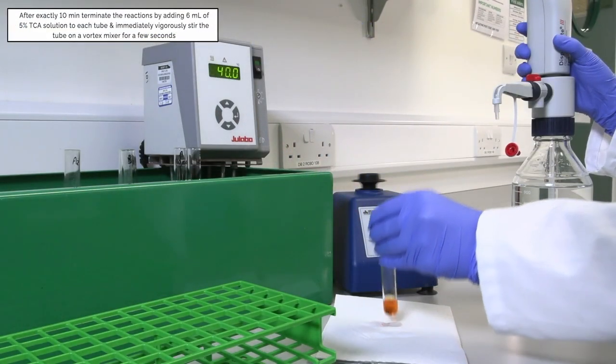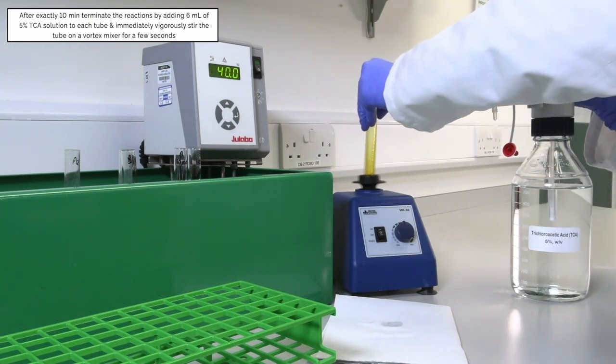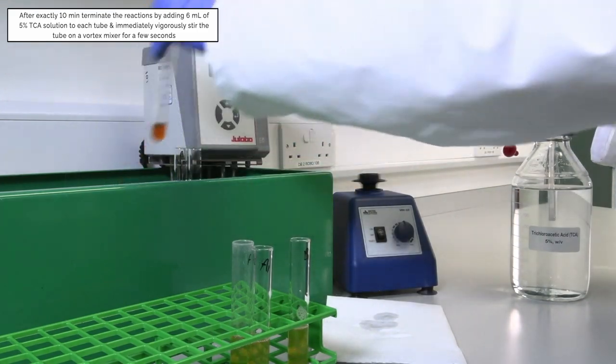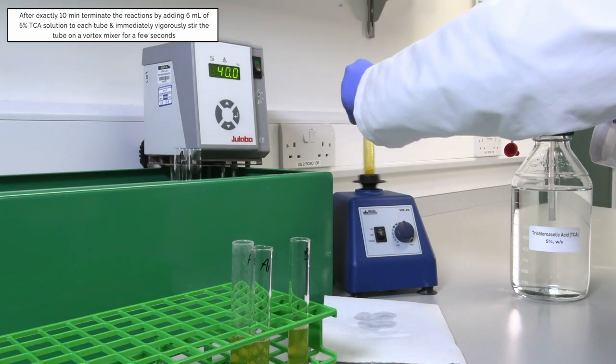After exactly 10 minutes from addition of the enzyme to each tube, terminate the reactions by adding 6 ml of 5% TCA solution, the precipitant solution, to each tube and immediately vigorously stir the tube on a vortex mixer for a few seconds.